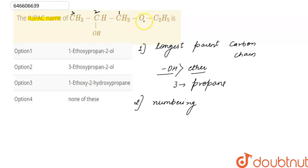If we start numbering from opposite side, then position of functional group is same but substituent gets number three. According to lowest set of locant rule, lowest set of locant rule, we have to provide lowest numbers to substituent and the functional groups.